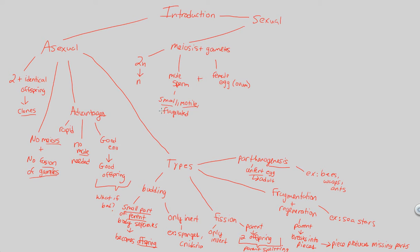That flagella that the sperm possesses allows for this motility, and the small nature of the sperm is important when it needs to travel and eventually reach the female egg, which is actually quite the opposite. The female egg is a large, non-motile structure.